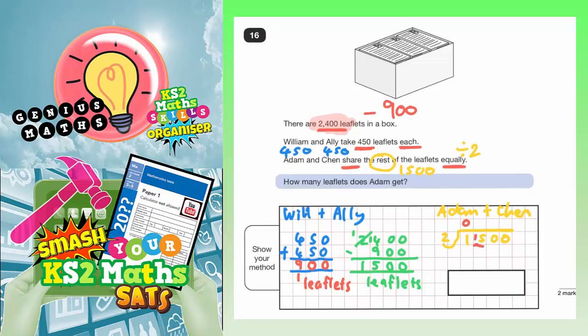2s into 10 goes 5. And 2s into nothing won't go. 1,500 split equally between Adam and Chen into 2 is 750 leaflets each.